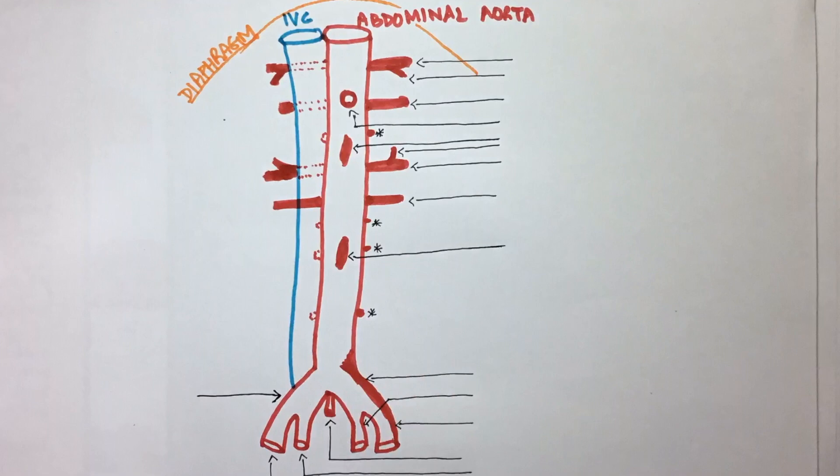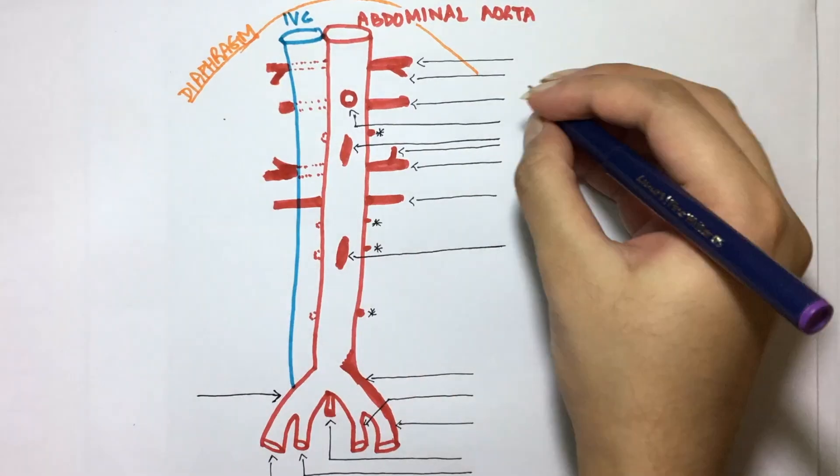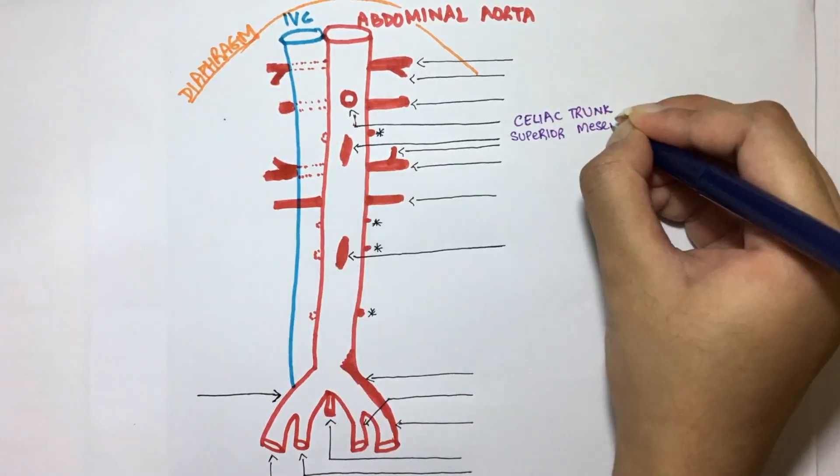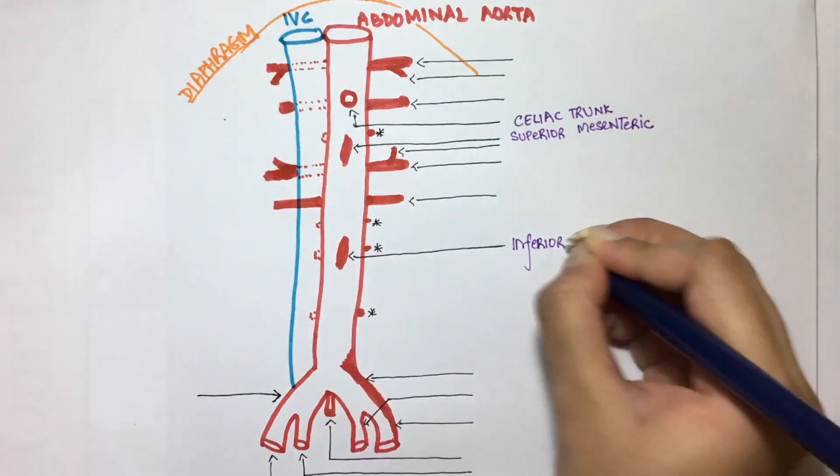If you weren't able to get all of them, it's absolutely fine. By the end of this video, you'll know each one of them. Three arteries which supply the GI tract are the celiac trunk, superior mesenteric artery, and the inferior mesenteric artery. These are not paired.